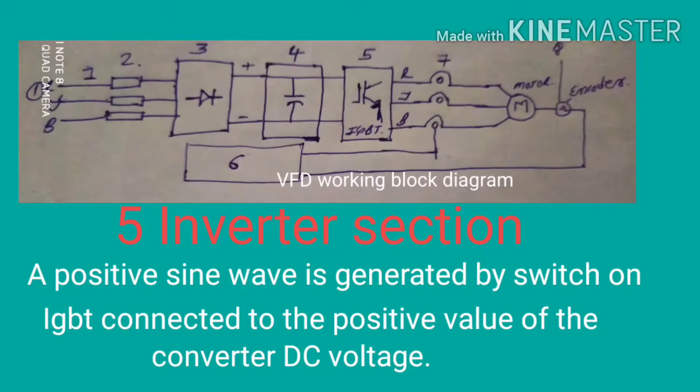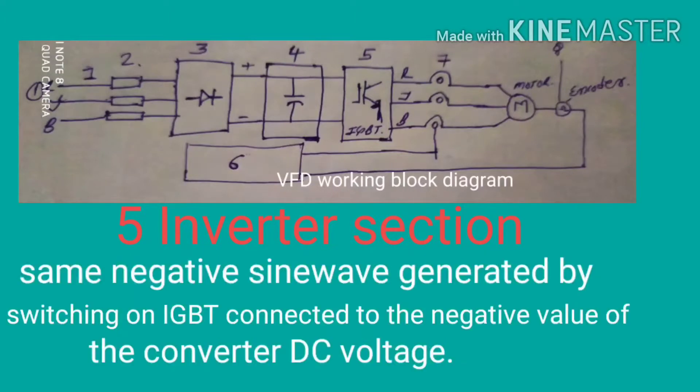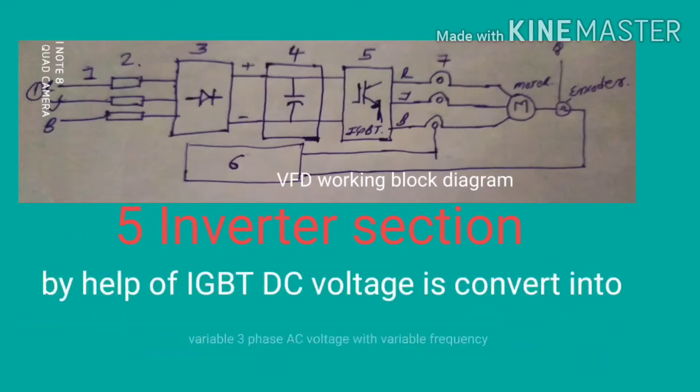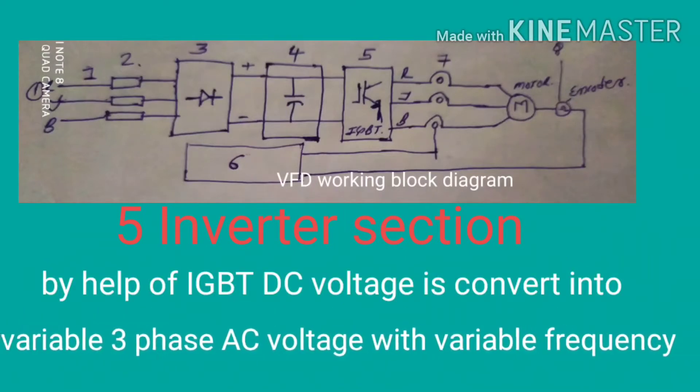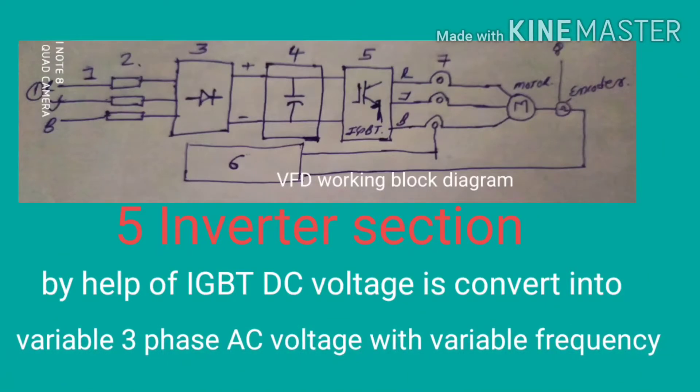The positive sine wave is generated by switching on IGBT connected to the positive value of the DC link voltage. Same negative sine wave is generated by the IGBT connected to the negative value of the converter DC voltage.